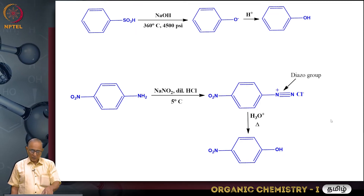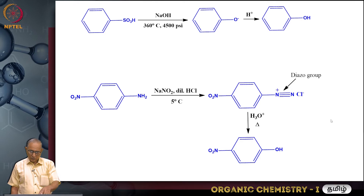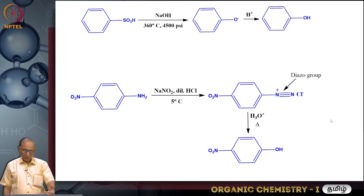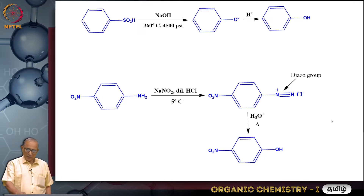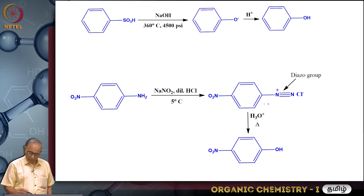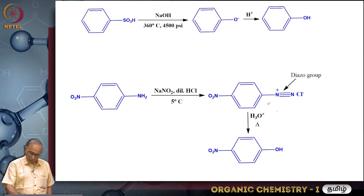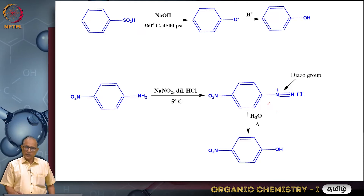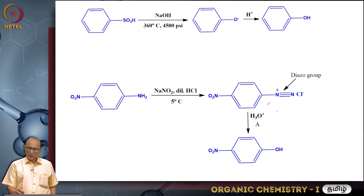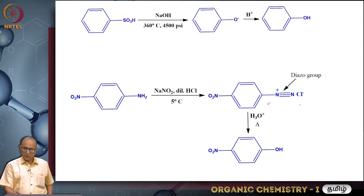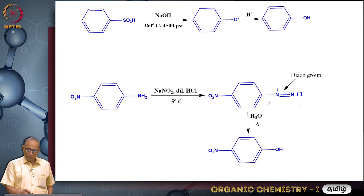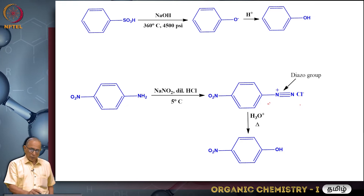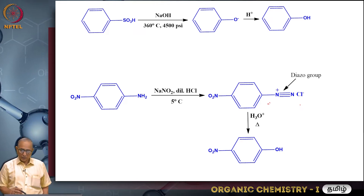Para-nitroaniline is treated with sodium nitrite and dilute HCl at about 0 to 5 degrees. The amino group converts to a diazonium group — an N triple bond N — giving para-nitrobenzene diazonium chloride. Nitrogen carries a positive charge and chloride is the counter ion. So para-nitrobenzene diazonium chloride is the product of treating para-nitroaniline with sodium nitrite and dilute HCl at 0 to 5 degrees.